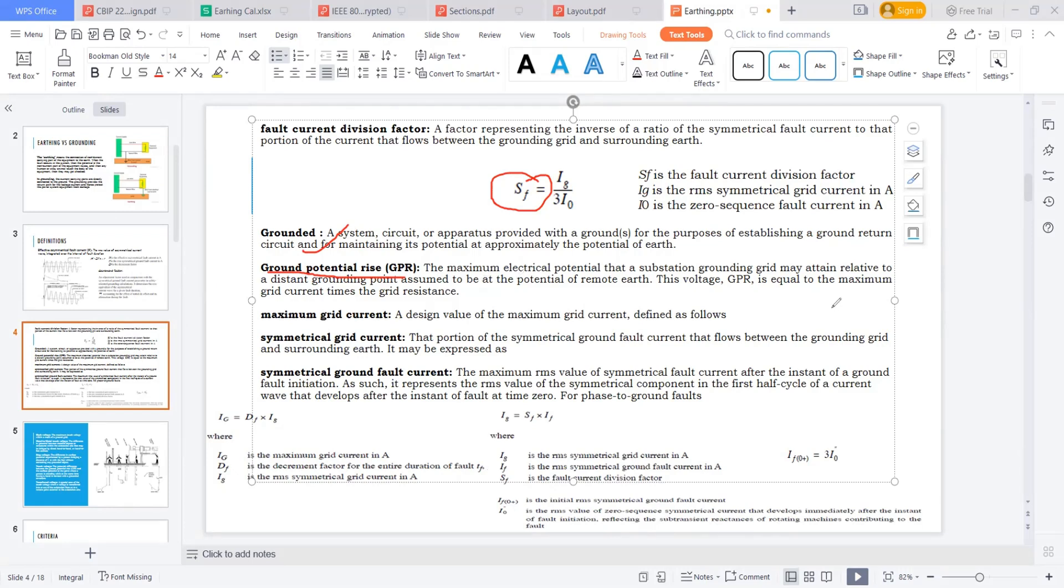Suppose I place a mat here. Whenever a fault occurs, this fault may occur. This is one way and this is the fault. Here there is grounding - this is a gridded system. This grid has some resistance.